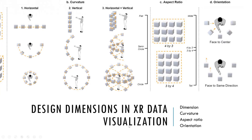The design dimensions relate to the orientation and general design of the layout and how the user interacts with the data. Four variables were identified to decide the best layout to test: dimension, curvature of the visualization array, aspect ratio, and the orientation of the user relative to the data. Using these four variables, the researchers determined which layouts they would test.